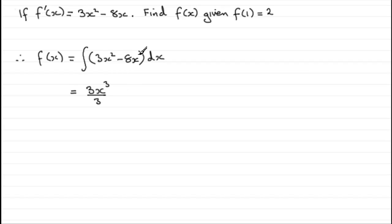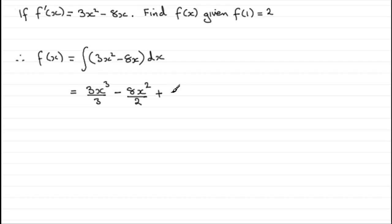The same applies to this term. Minus 8x at the moment — add 1 to the power, it's 8x to the 1, so add 1 to the power you get 2, divide by that new power 2. But don't forget that constant of integration, which I'm going to call plus c.